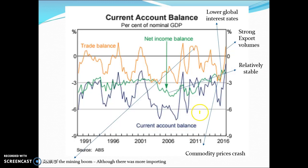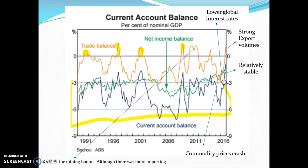Looking at the current account balance graph, Australia's trade balance is sometimes positive — meaning the total value of exports for goods and services exceeds the value of imports — but generally it's negative. The net income section, the green line, is always negative because of the amount of interest on our foreign debt, so our current account balance is always negative. Even when we run a surplus on the balance of trade, we still run a current account deficit because of the large deficits in the other two sub-accounts.